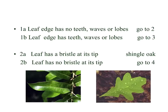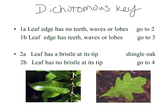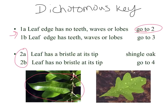Hopefully you remember what this is — a very shortened, abbreviated version of a dichotomous key. A dichotomous key is used to classify or identify unknown organisms. We always start at the beginning. So if I have two leaves and I'm classifying the first one, I start at number one — 'no teeth, waves, or lobes' — and that tells me to go to number two. Then I choose 'has a bristle at its tip' and that tells me this is a shingle oak.